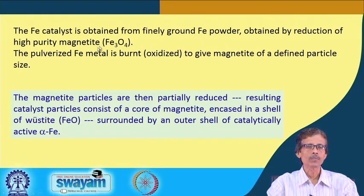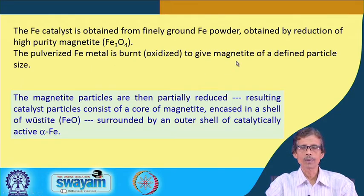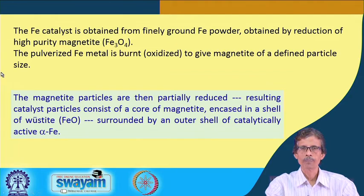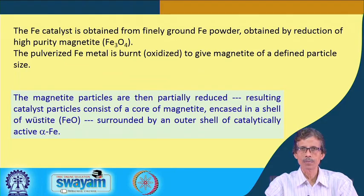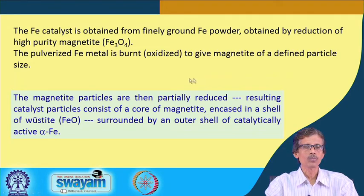Reduction of magnetite gives iron powder — very fine, pulverized iron metal particles. If we start with lower quality iron metal, we can bond it to give magnetite of a definite particle size. These particle sizes are important because they determine the typical surface area, meaning the amount of area that can be covered by a monolayer of catalyst particles.